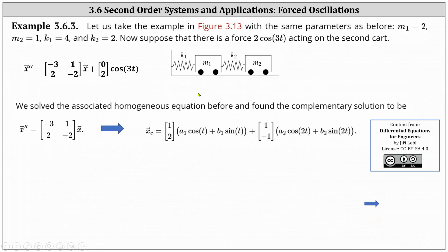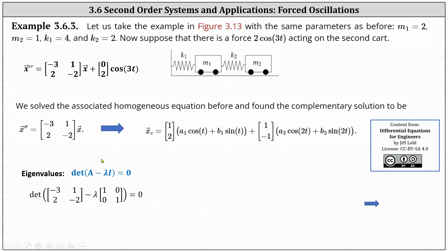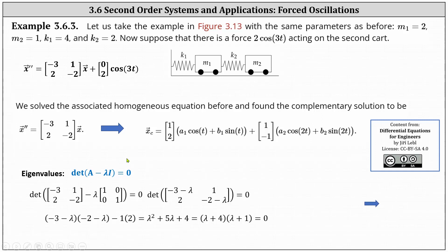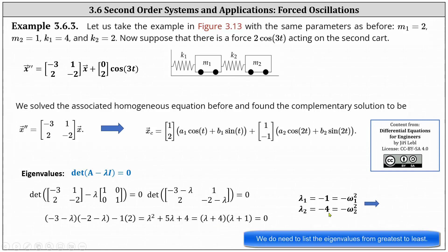To find the solution, we first solve the associated homogeneous equation. The first step is to find the eigenvalues of matrix A by setting the determinant of A minus lambda I equal to zero and solving for lambda. Simplifying gives lambda equals negative four or lambda equals negative one, so lambda sub one equals negative one and lambda sub two equals negative four. This indicates negative omega one squared equals negative one and negative omega two squared equals negative four, giving natural frequencies omega one equals one and omega two equals two.